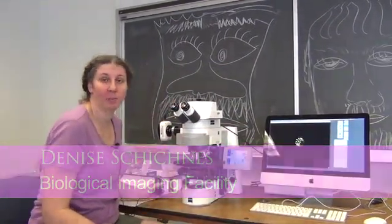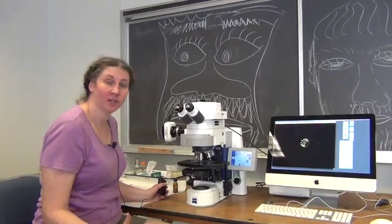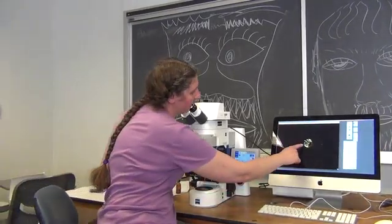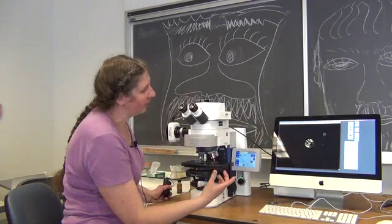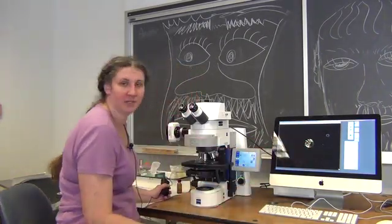This volvox is a protist, a multicellular organism. What you can see is it kind of looks like a little death star. It has little flagella, and they swim around and orient themselves to the light.